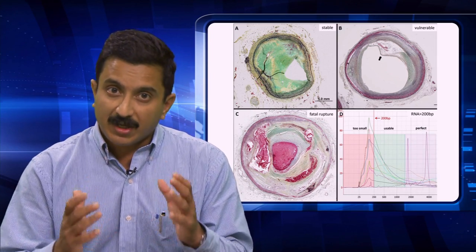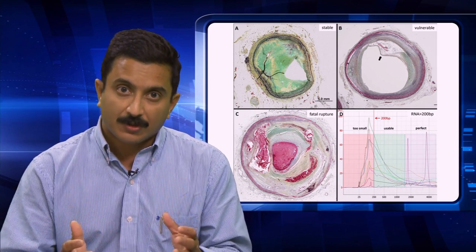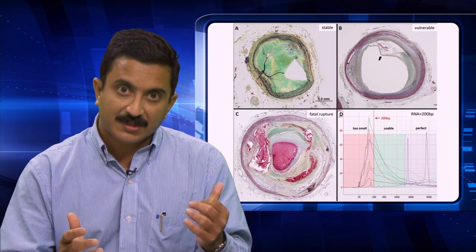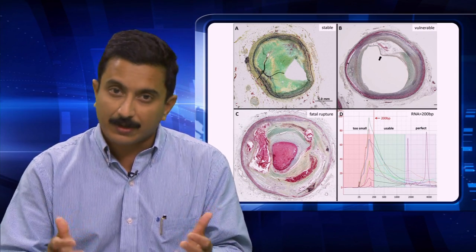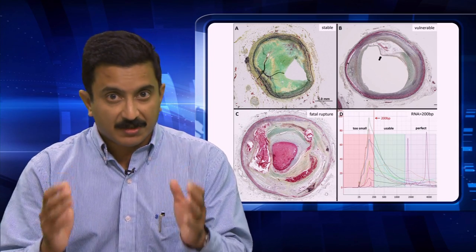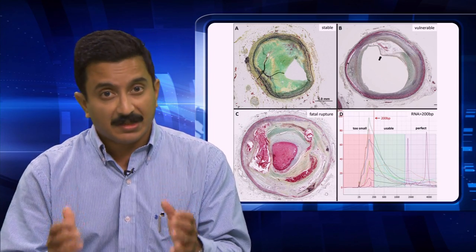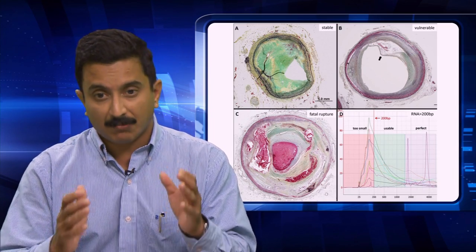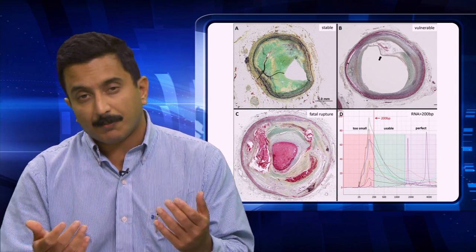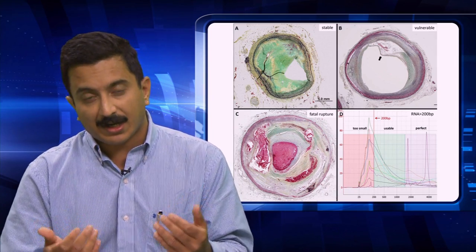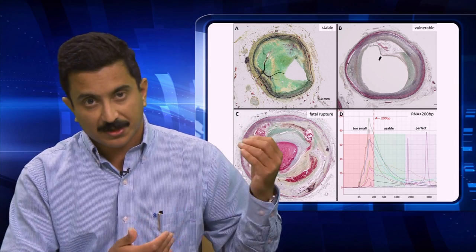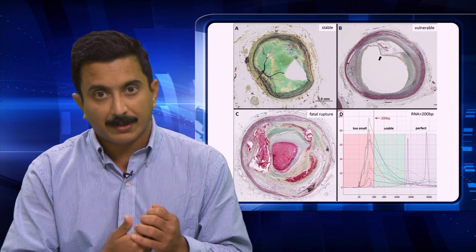So one of the big unknowns of cardiology is what exactly causes a vulnerable plaque to go into that ruptured state. If we understand this, it helps us immensely in managing advanced cardiovascular disease. My specialty is in applying RNA sequencing to the study of cardiovascular phenotypes, such as plaque rupture, which is what we see here.